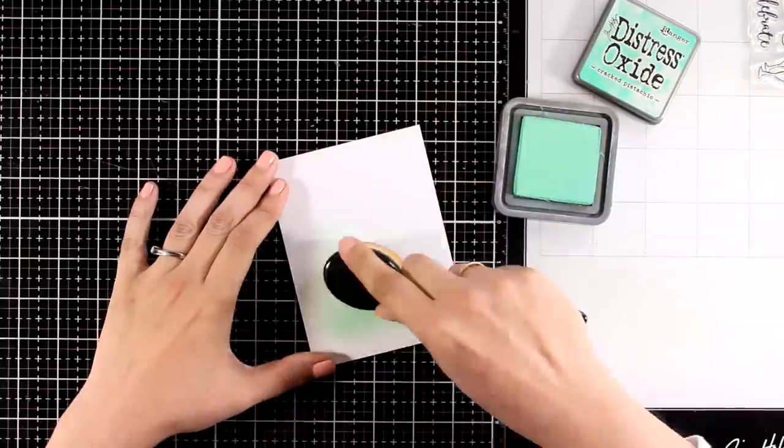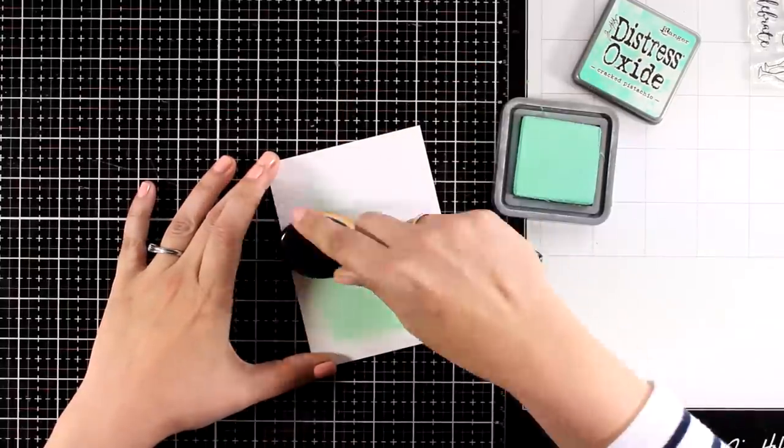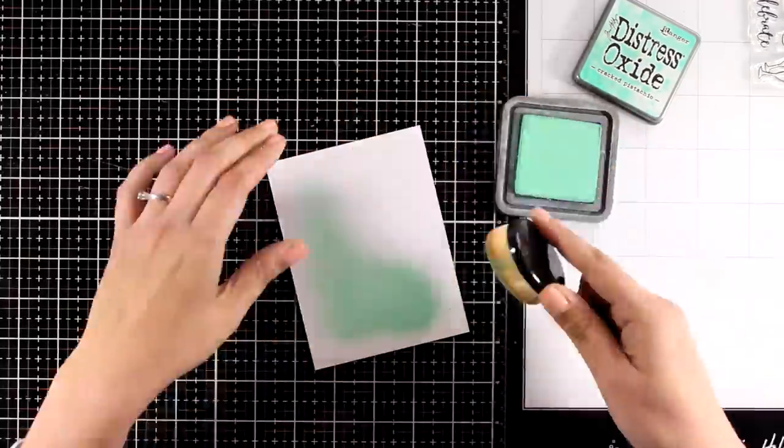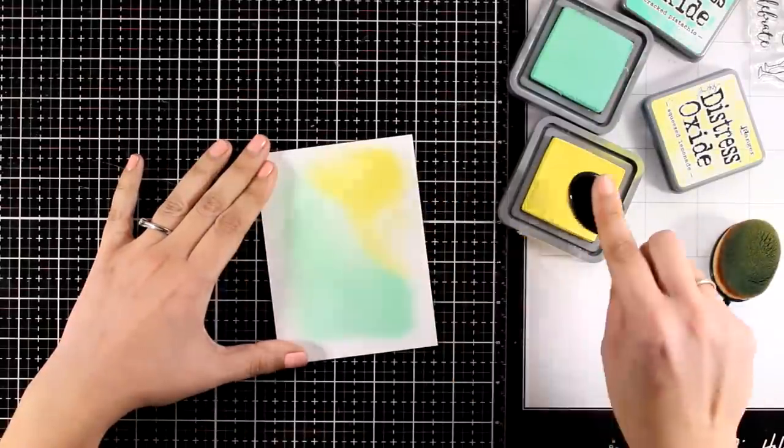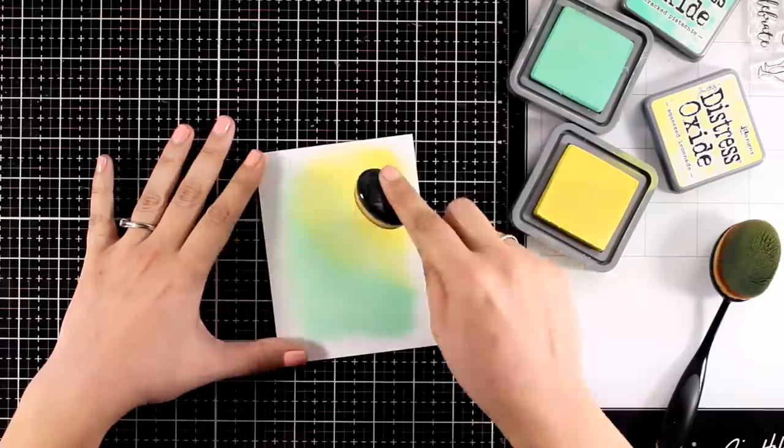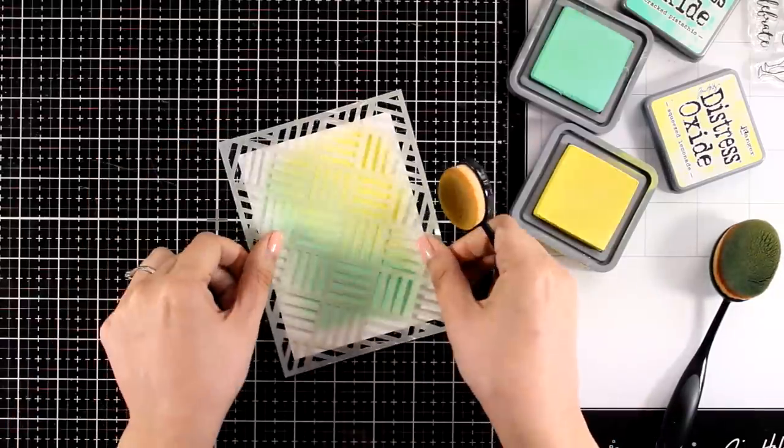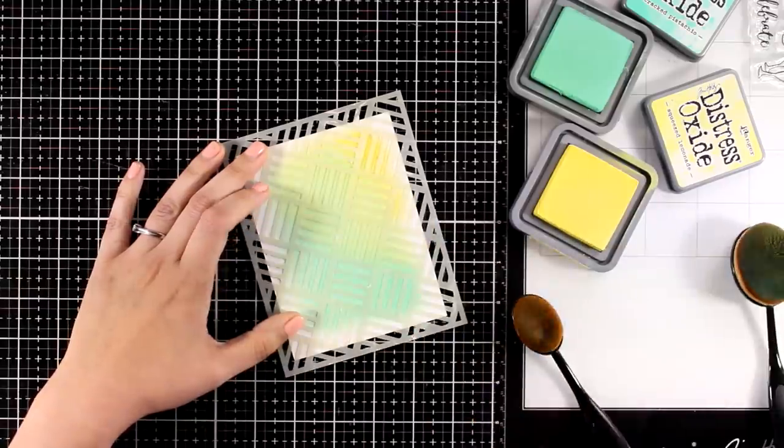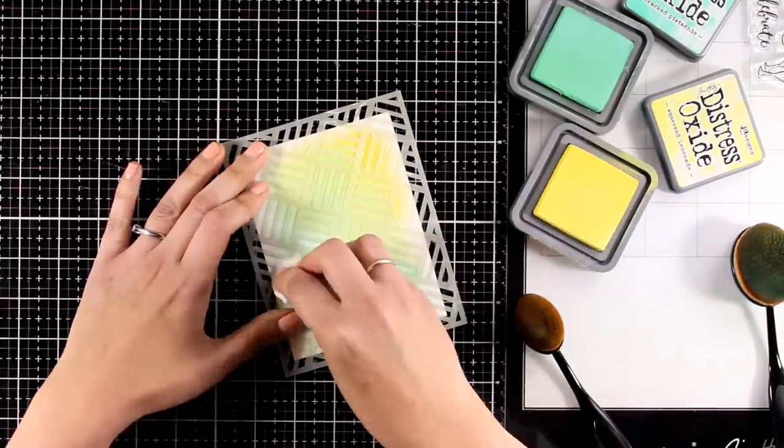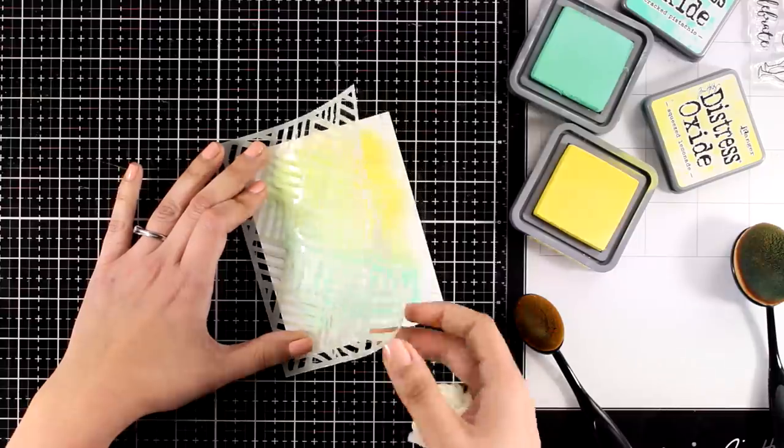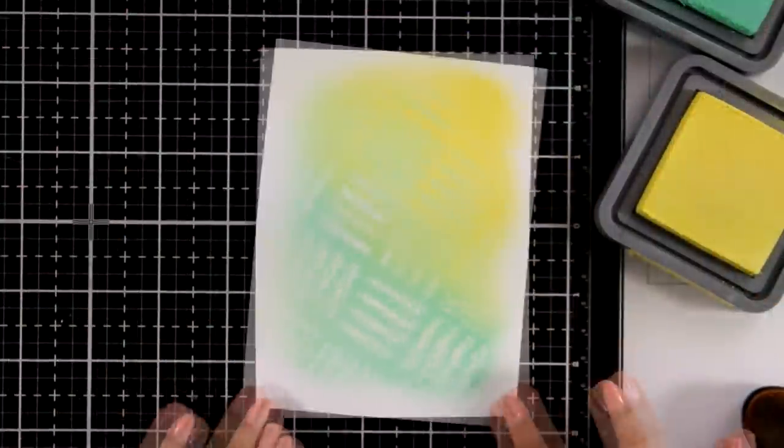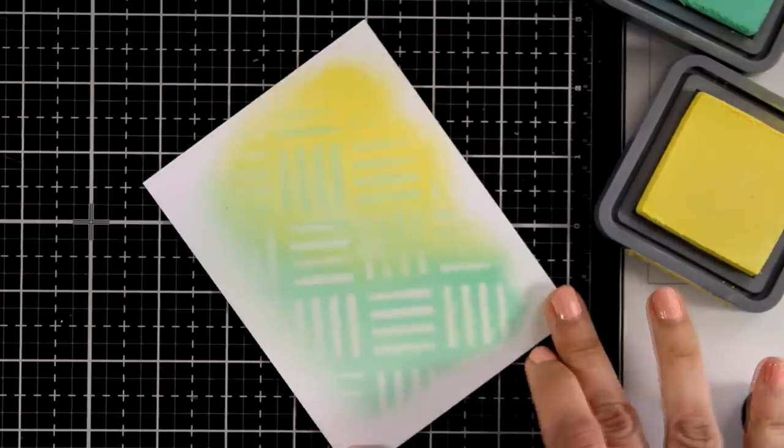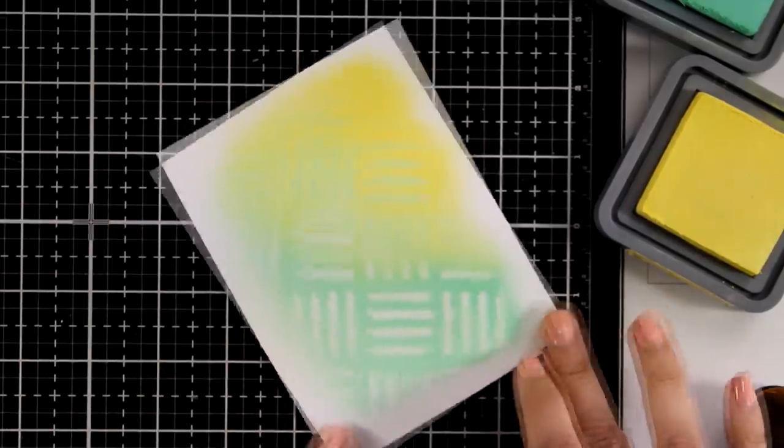For the last background for today I am combining two colors, this is Cracked Pistachio and I will bring in Squeezed Lemonade. I am mixing the colors mainly at the center and now I am going with Cracked Pistachio over Lemonade and I am lifting with a baby wipe from the bottom corner. And again here is a close-up look where you can see how cool this background looks.